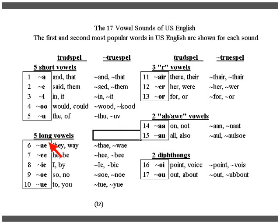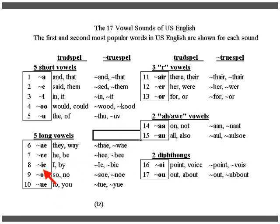The long vowels are made by putting a silent e next to the long vowel, and they take the same name as the letter names. This is the long 'a' sound as in 'they' and 'way.' This is the long 'e' as in 'he' and 'be.' The long 'i' as in 'I' and 'by.' The long 'o' as in 'so' and 'no.'